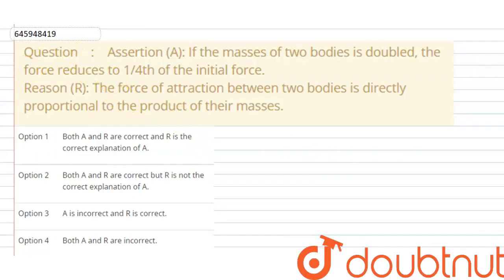Hello everyone, Doubtnet is your welcome. So in this question says that, Assertion A, if the masses of two bodies is doubled, their force reduces to one-fourth of the initial force. And reasons are, the force of attraction between two bodies directly proportional to the product of their masses.